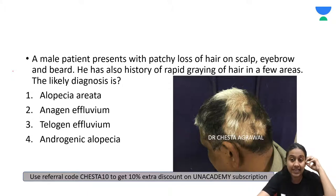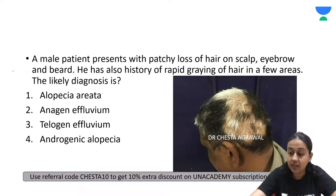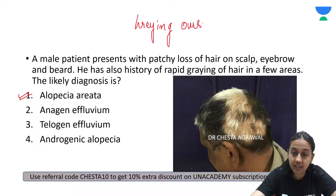A male patient presents with patchy loss of hair on the scalp, eyebrows, and beard, with rapid graying of hair in some areas. The correct answer is alopecia areata. This patient is demonstrating the phenomenon known as 'going white overnight.' In alopecia areata, T lymphocytes are directed against pigmented hairs. The pigmented hairs fall, but the white hairs are spared, giving the appearance of overnight whitening.